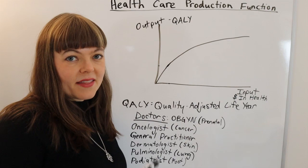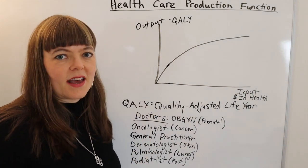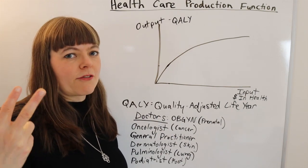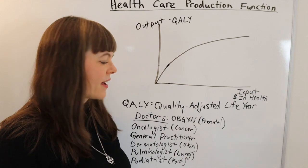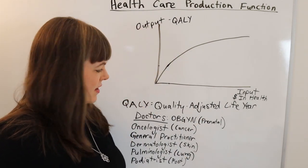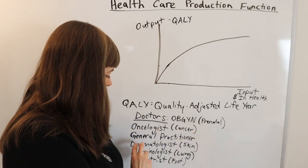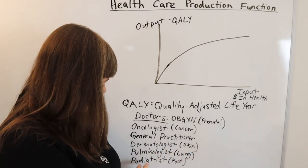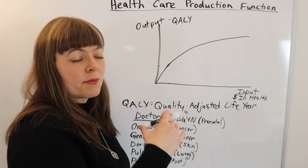So we have six possible doctors that you could hire. I'm going to approach this by imagining that you are a healthcare administrator in a rural town that doesn't even have a hospital — it has no healthcare. You're trying to figure out: if you have enough money to hire one doctor, who do you hire? And then after that, if you have enough money for a second doctor, who's the second doctor you hire? Coming up with that ordering depends on the value of each doctor according to the added quality adjusted life years for that population. So here we've got an OBGYN — a prenatal care doctor who delivers babies and handles women's health — an oncologist, a cancer doctor, a general practitioner, a dermatologist, a pulmonologist, and a podiatrist.